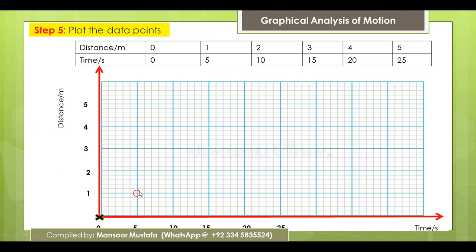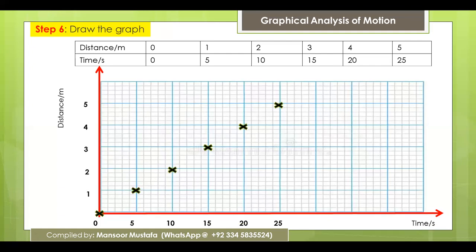The circle should fit within the surrounding boxes and not cross them. Same for the cross. After marking, you have to mark all available data points this way — then after marking all data points, the next step is to draw the graph by joining these points.